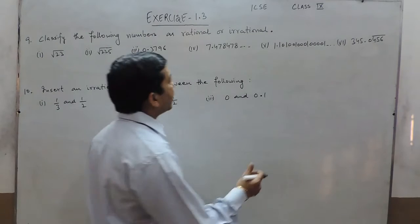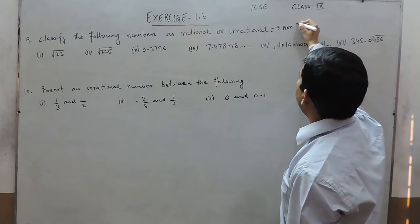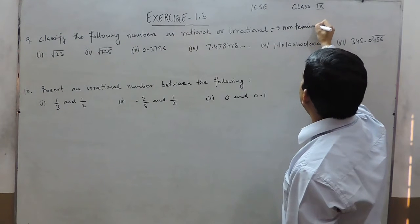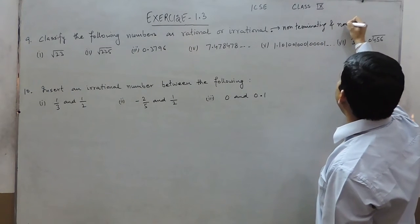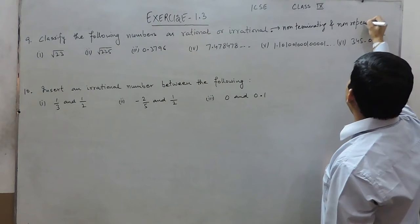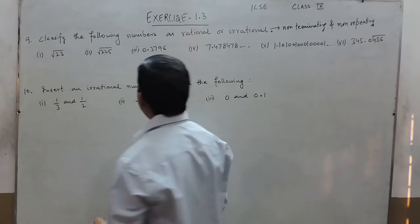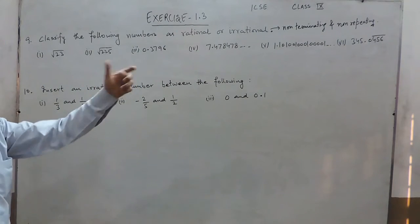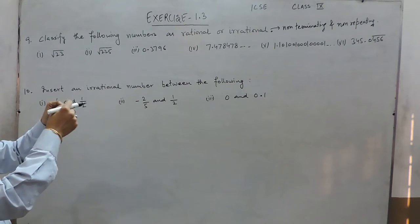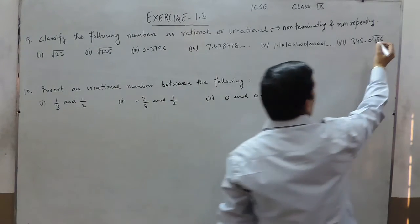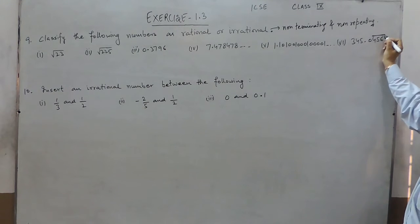Irrational numbers are basically non-terminating and non-repeating. When I say non-terminating and non-repeating, that means all these numbers are the ones which do not have a bar or a sign above the digits.